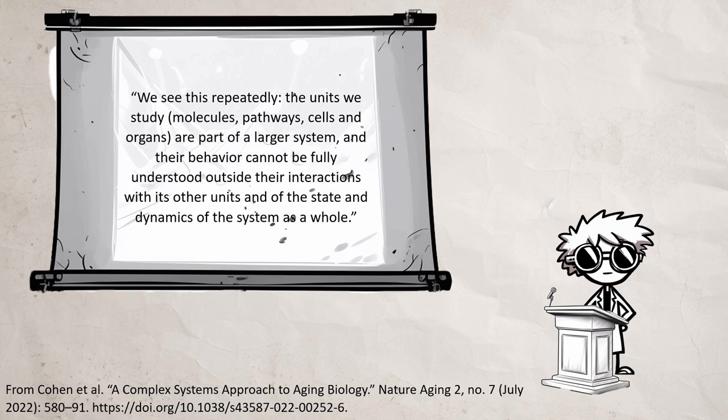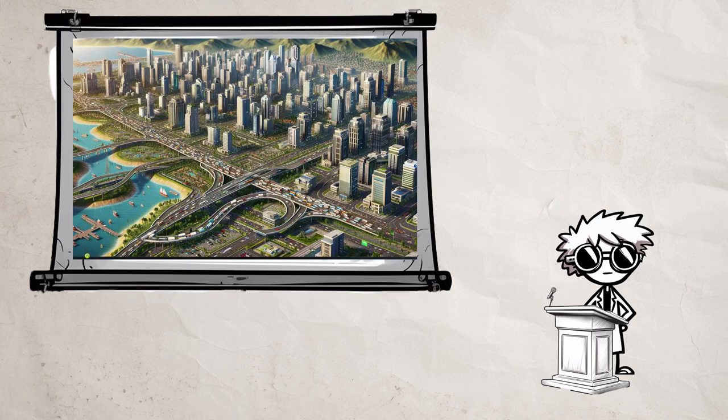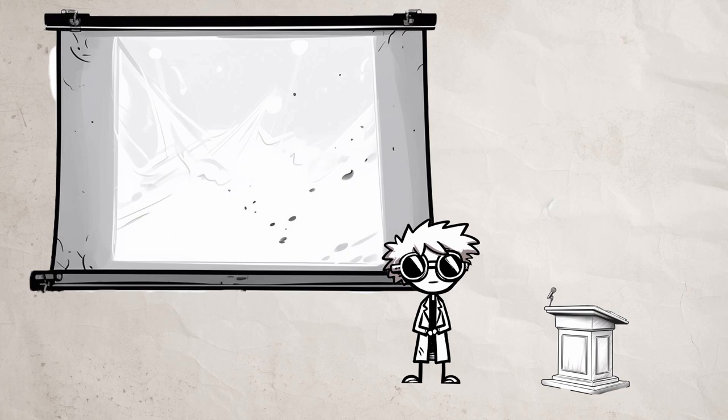We see this repeatedly. The units we study—molecules, pathways, cells, and organs—are part of larger systems and their behavior cannot be fully understood outside of their interactions with the other units and the state of dynamics of the system as a whole. So consider our SimCity traffic analogy. Traffic gets worse the closer you get to the end of the game. It might be easy to assume you can reduce the number of cars and that would help your city survive longer, but if you just get rid of all the cars that could cause much bigger problems. The traffic is there because it has emerged from the needs of the simulated people. They need to get from their home to their businesses. Making that impossible is a bad idea. It's not as simple as cars bad. We need to understand the whole system to intervene effectively.